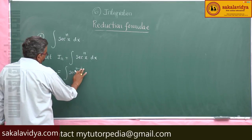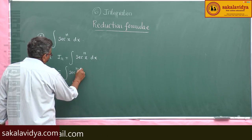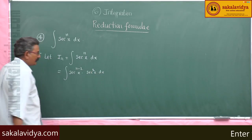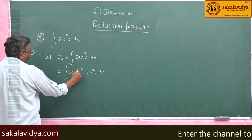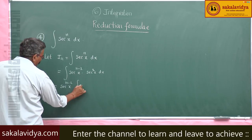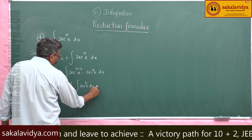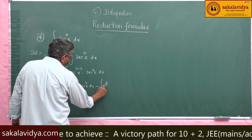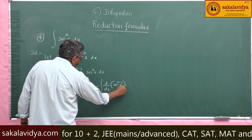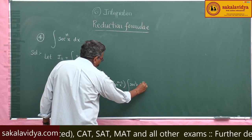Next reduction formula: integral of sec^(n-1) x or sec^(n-2) x times sec²x dx. This is the first function and this is the second function: sec^(n-2) x times integral of sec²x dx, minus d/dx of sec^(n-2) x times integral of sec²x dx, whole dx.